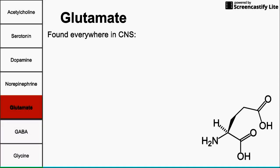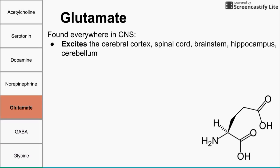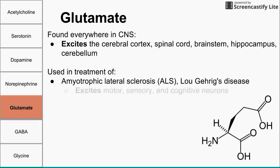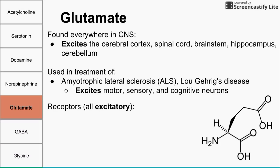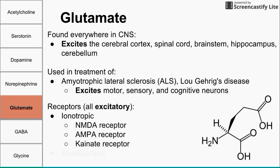Next is glutamate, an amino acid. Glutamate is found everywhere in the central nervous system and excites everything — it's known as the universal exciter. It excites so much that there's a phenomenon called excitotoxicity, where neurons can be damaged or killed by over-excitation. Glutamate is used to treat ALS, also known as Lou Gehrig's disease, where it excites motor, sensory, and cognitive neurons. The receptors for glutamate are all excitatory: the ionotropic NMDA, AMPA, and kainate receptors, plus metabotropic receptors that follow the Gs and Gq signaling pathways, which are also excitatory.